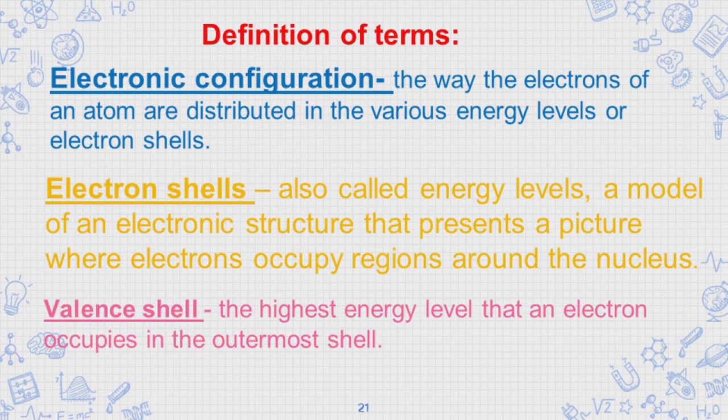2. Electron shells are also called energy levels. A model of an electronic structure that presents a picture where electrons occupy regions around the nucleus.